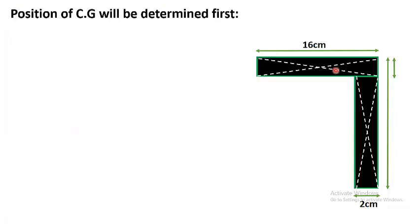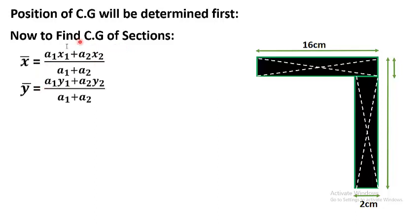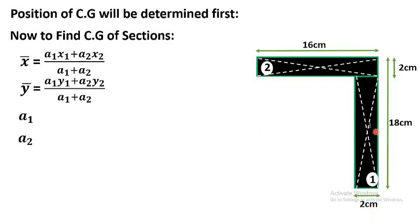This is a step-by-step process, so don't miss a single step. First, we will find the position of the center of gravity. To find the center of gravity of a section, we use the area moment method formulas for x̄ and ȳ, which require A1, x1, y1 and A2, x2, y2. We divide the whole figure into two regions: region 1 and region 2. A1 is the area of region 1.